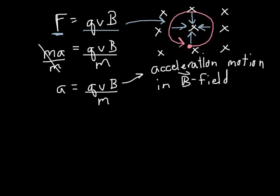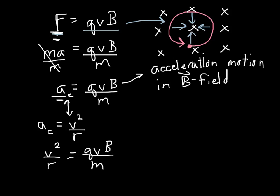We can remember from physics one that when a particle moves in a circle, the acceleration it experiences is centripetal acceleration, equal to v squared divided by r. So this acceleration I just solved for is centripetal acceleration. I substitute that in and find that v squared divided by r equals q times v times B divided by m.